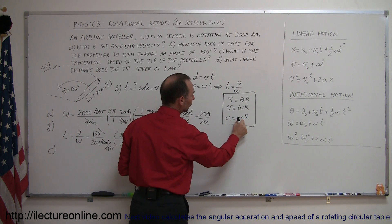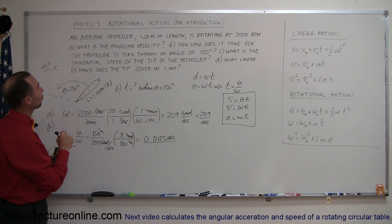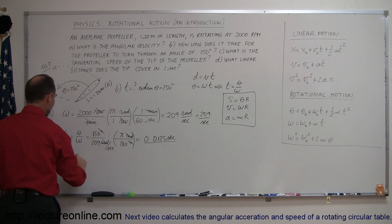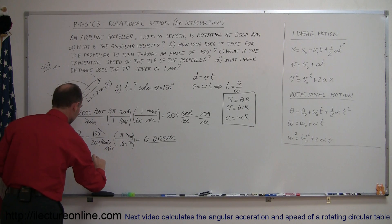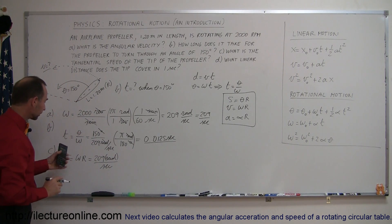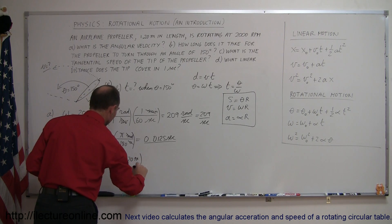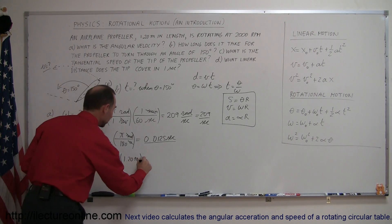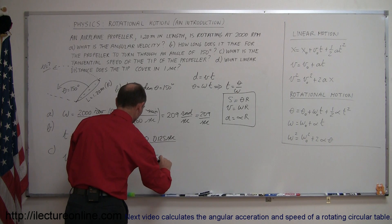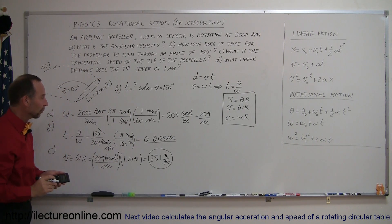Simply multiply the rotational variable by r, the radius of the circular motion, to get the tangential values for distance, velocity, and acceleration. So the tangential velocity v equals omega times r. Omega equals 209 radians per second — and remember, radians is effectively a non-unit — multiplied by the radius of 1.2 meters. The units come out as meters per second. Taking 209 times 1.2 gives us 251 meters per second at the tip of the propeller.